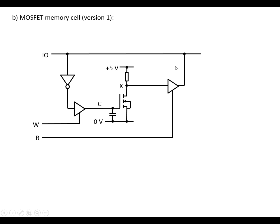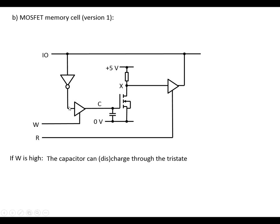We've got two versions, slight variations of a read and write memory location. So this would be a RAM cell. What we've got here is a tri-state connected to the gate of the MOSFET and the capacitor, and another tri-state connected from X to the data line. So if W is high, we've got a connection through the tri-state so that the capacitor can charge and discharge through the tri-state from the NOT gate here.